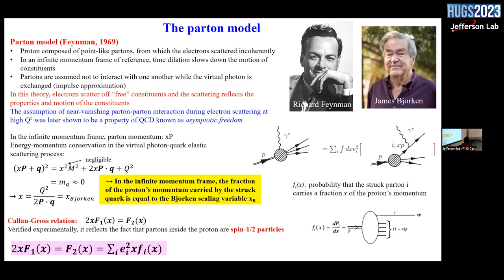In the infinite momentum frame, the fraction of the proton momentum carried by the struck quark equals Bjorken X. There was further development thanks to the Callan-Gross relation: the fact that the partons have spin one-half implied that the two structure functions F1 and F2 were linked by this relation, which was verified experimentally. What was then obtained from the parton model hypothesis is that the structure function F2 is the sum of the squared charges of the partons times X times the probability that the parton has a given fraction of the momentum.